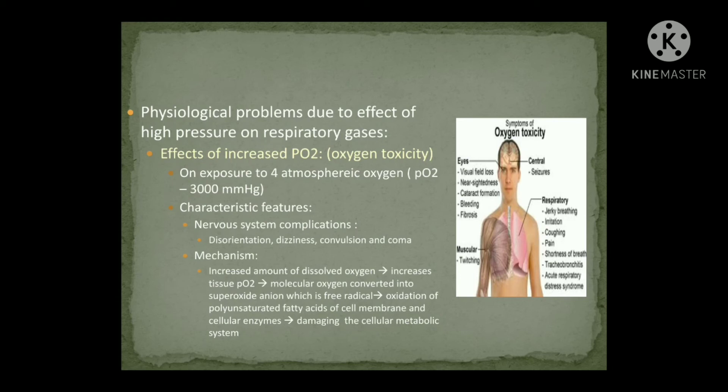The mechanism for CNS symptoms due to oxygen toxicity: dissolved oxygen increases, and because of the increase in tissue partial pressure of oxygen, molecular oxygen is converted into superoxide anions — free radicals. These free radicals cause oxidation of polyunsaturated fatty acids present in cell membranes and enzymes, resulting in damage to cellular metabolic systems.